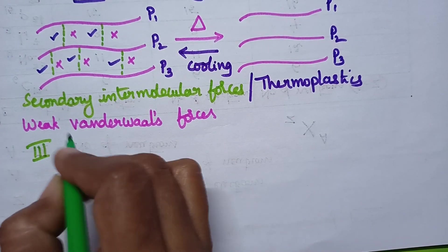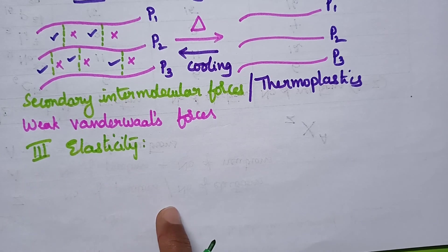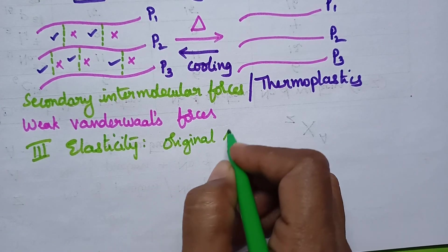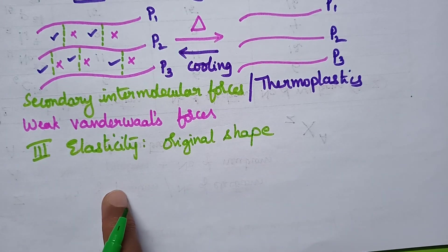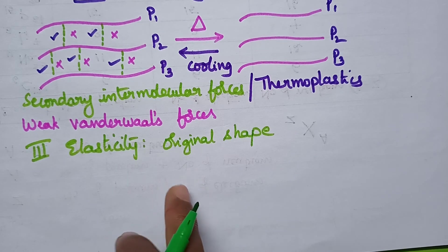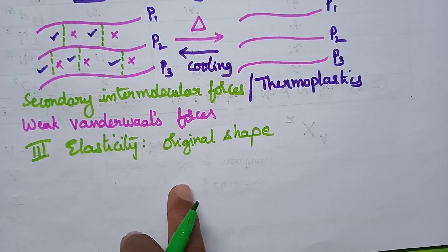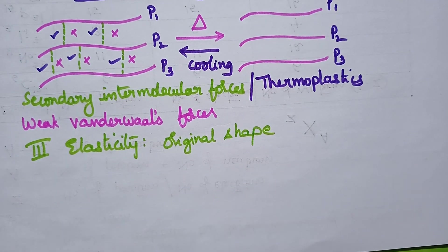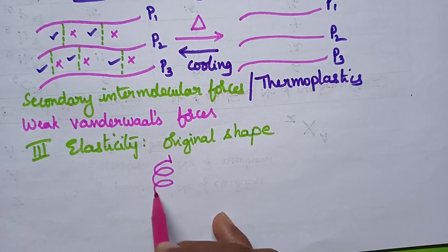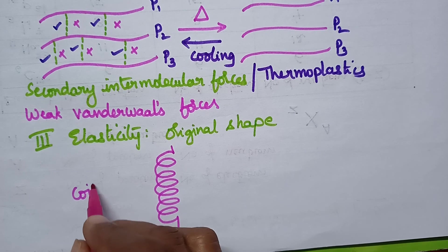The third property is elasticity. Elasticity means the ability of the polymer to regain its original shape. Whenever an elastomer is stretched, it is capable of undergoing elongation — the length of the polymer increases — and whenever the stretching force is released, it regains its original shape. In general, elastomers exhibit a coiled structure.